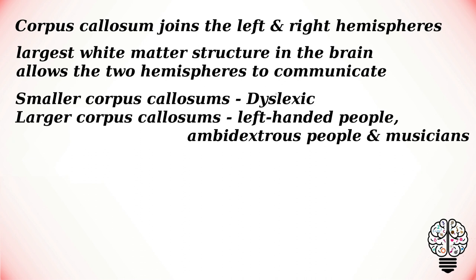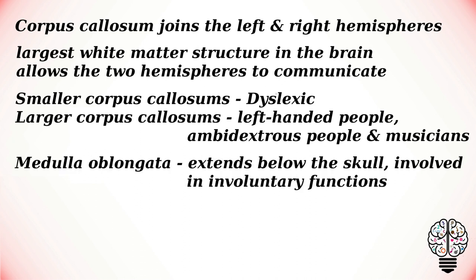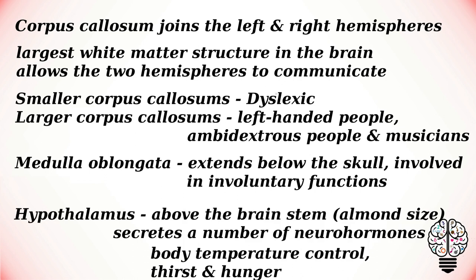Dyslexic children have smaller corpus callosums, while left-handed people, ambidextrous people, and musicians typically have larger ones. The medulla oblongata extends below the skull and is involved in involuntary functions such as vomiting, breathing, sneezing, and maintaining correct blood pressure.